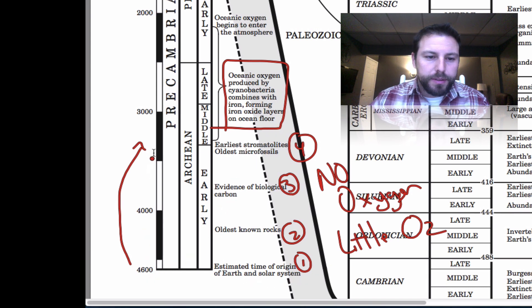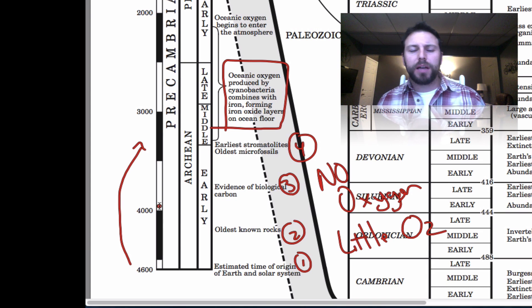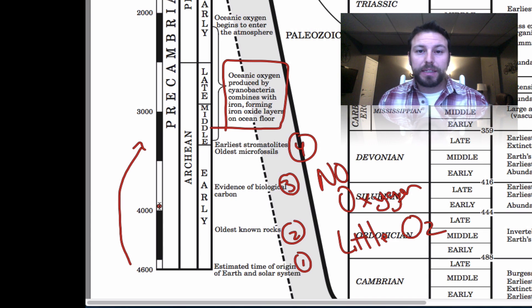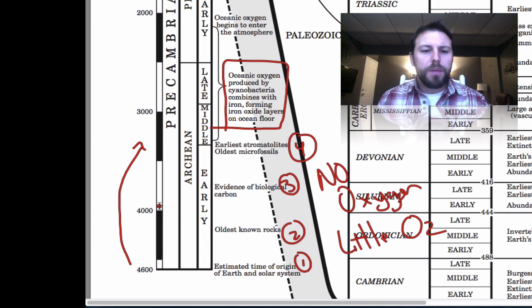From 4.6 to about 3 billion years ago, the atmosphere at that time was mostly volcanic outgassing. As the Earth cooled, we got a lot of water vapor, carbon dioxide, methane, and other gases coming out from volcanoes. That outgassing gave us the ingredients for life. We then get cyanobacteria — photosynthetic algae — pumping out oxygen into the atmosphere.